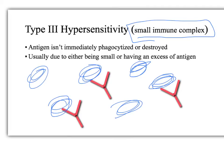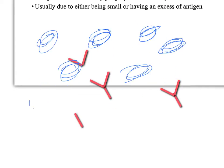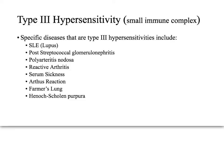Those small immune complexes get deposited in places within the body. The three main deposition sites are: the kidney, creating glomerulonephritis; the joints, creating arthritis; and the vasculature, especially the microvasculature, causing vasculitis. Once deposits form in those locations, complement eventually gets activated and inflammation occurs locally — inflammation of the glomerulus, inflammation of the joints, and so on.